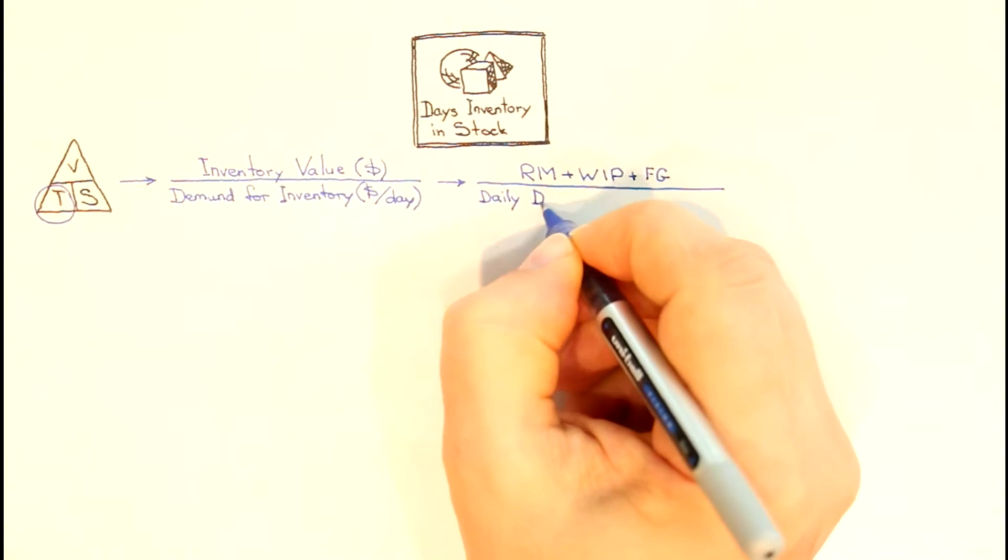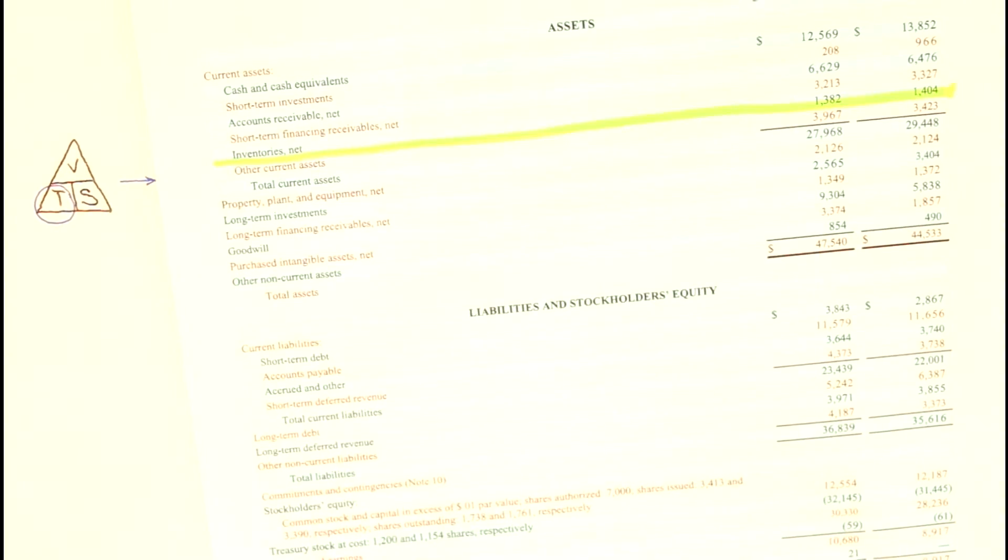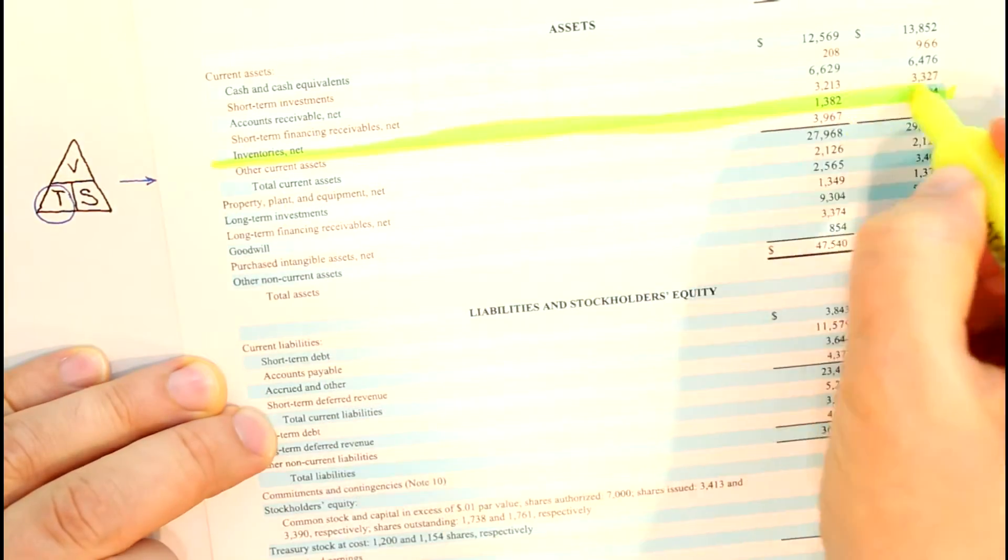Daily demand for inventory should be in the denominator. The balance sheet of the company gives us the inventory amount.